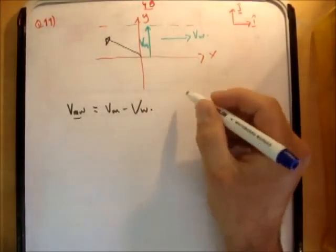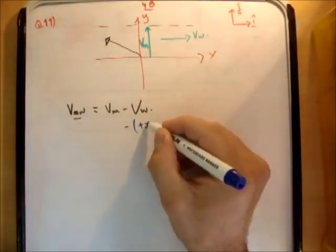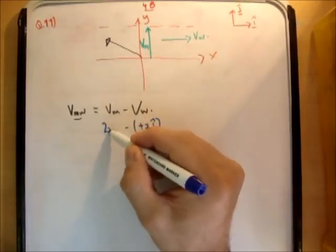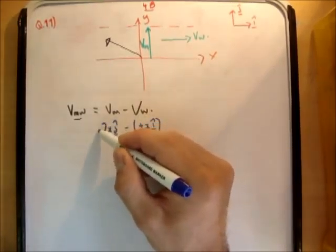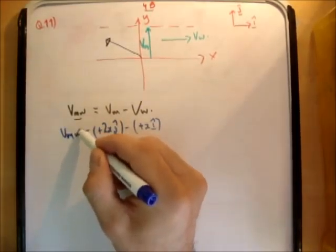So what we can say is this. We can say, if I call x the velocity of the water, this is going to be plus x i-hat. And the velocity of the man is going to be 2x j-hat.